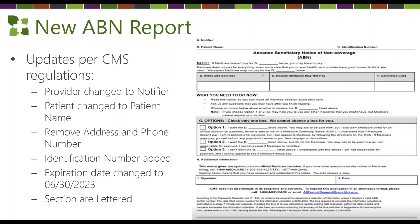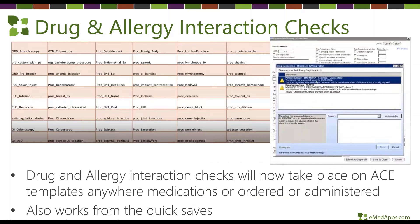There's a new ABN report available within the Next Gen application, updated per CMS guidelines. There's no change to the workflow setup or configuration — it's simply a report change, so the new report will pop up versus the old one. We now also have the ability for drug and allergy interaction checks to take place on ACE templates anywhere medications are ordered, bringing that functionality from the modules into the template side of documentation.